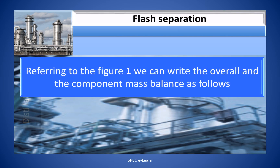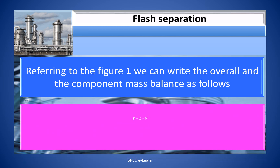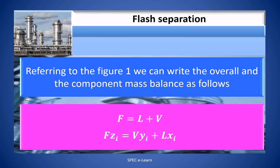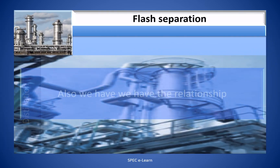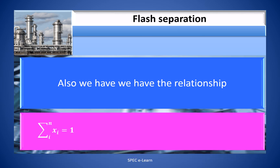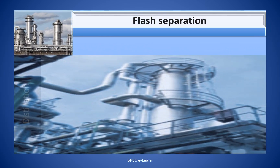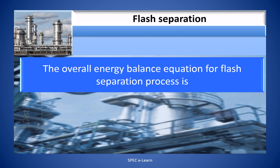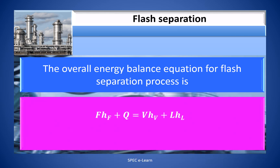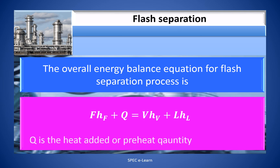Referring to Figure 1, we can write the overall and component mass balance as follows: F = L + V, and F × Zi = V × Yi + L × Xi. Also, we have the relationships: Σ Xi = 1 and Σ Yi = 1. The overall energy balance equation for the flash separation process is: F × HF + Q = V × HV + L × HL, where Q is the heat added or preheat quantity.